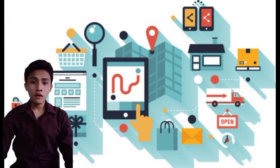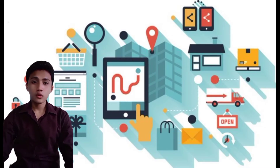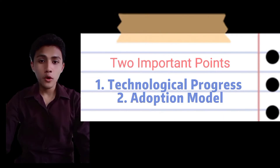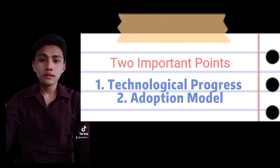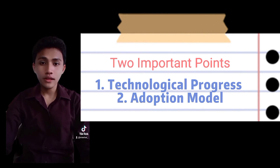In the concept of New Growth Theory, there are two important points: the technological progress model and the adoption model.